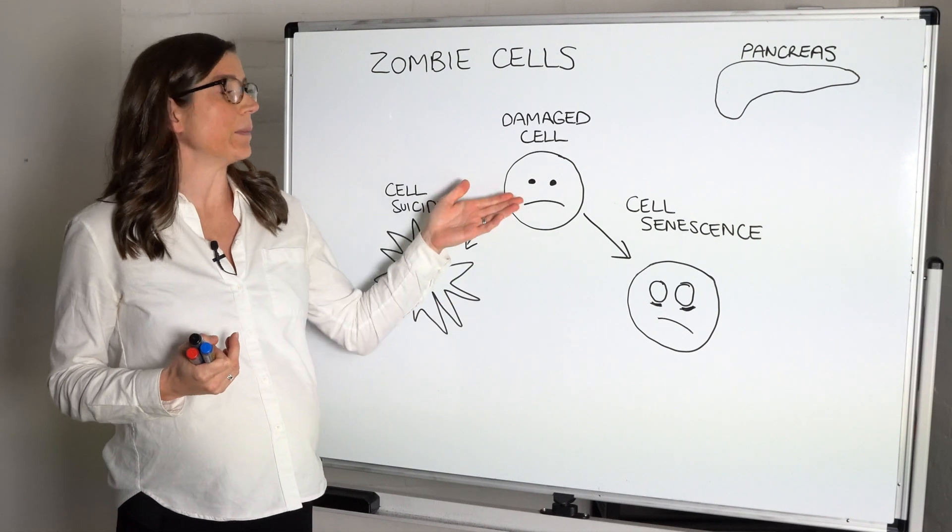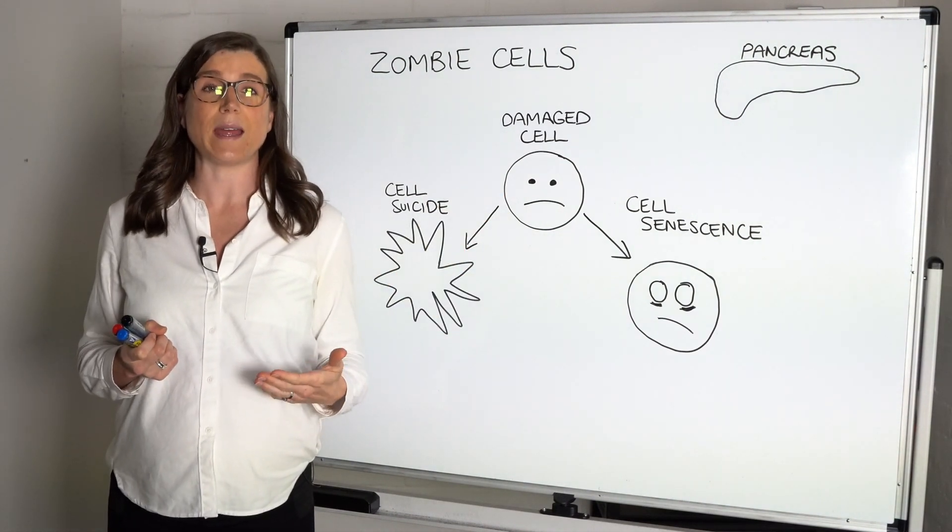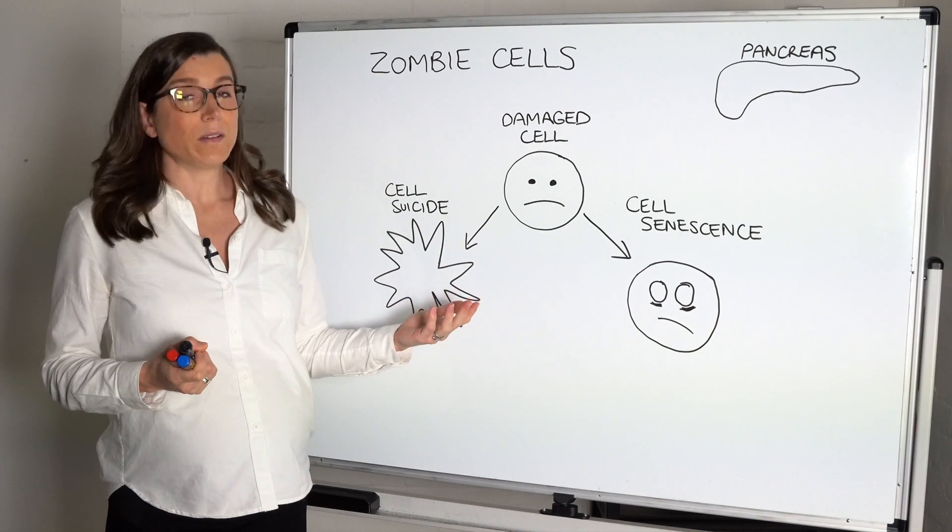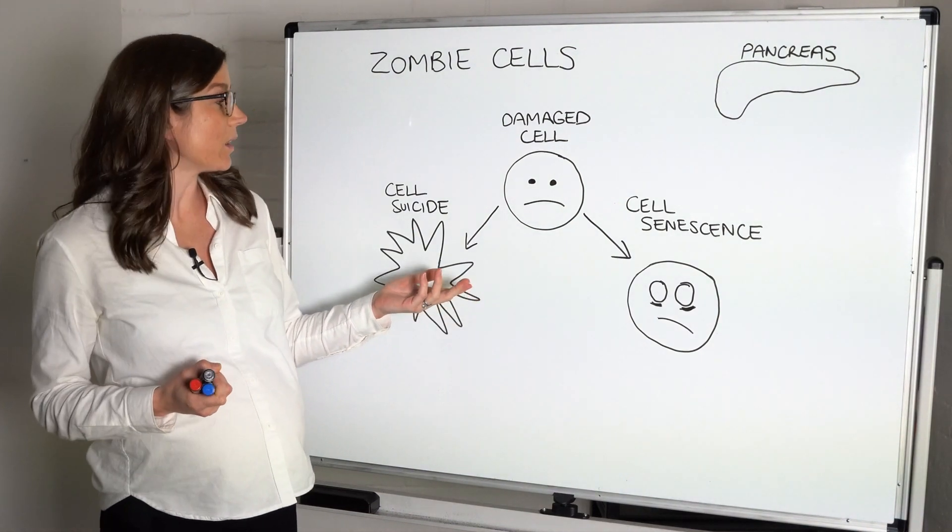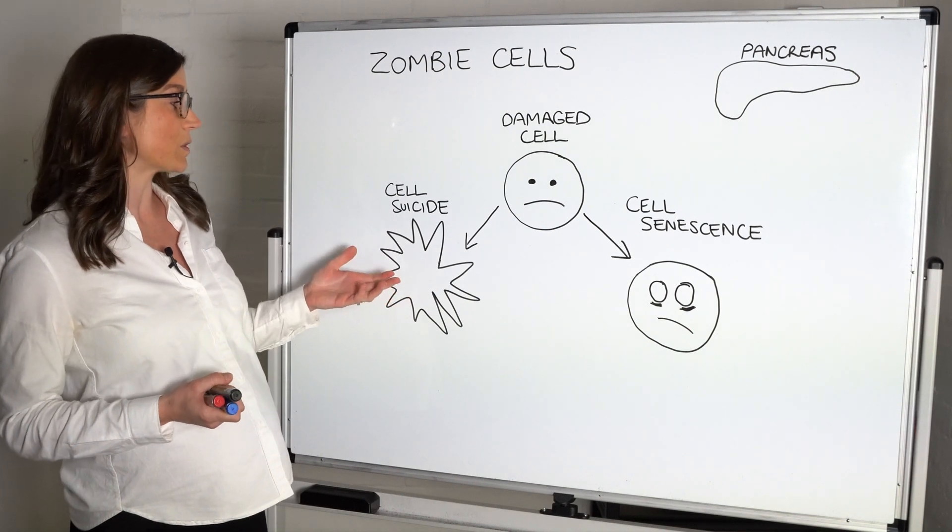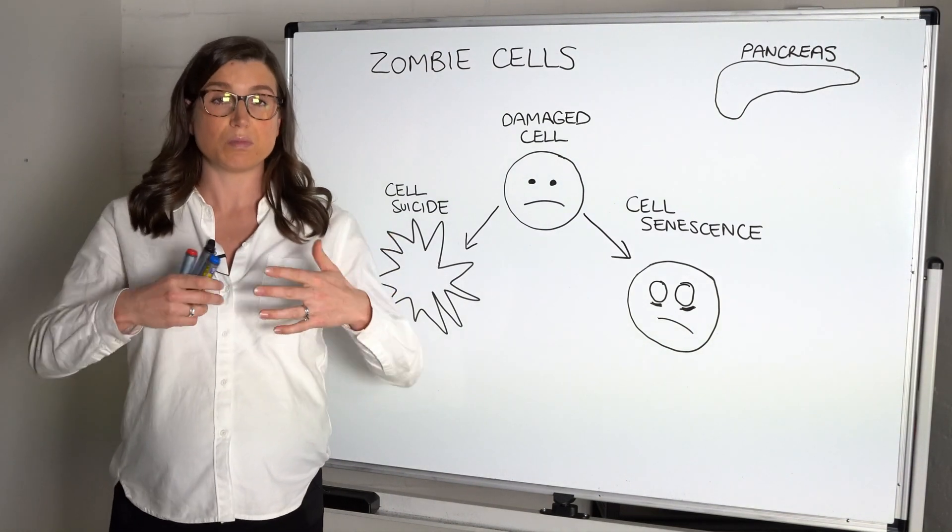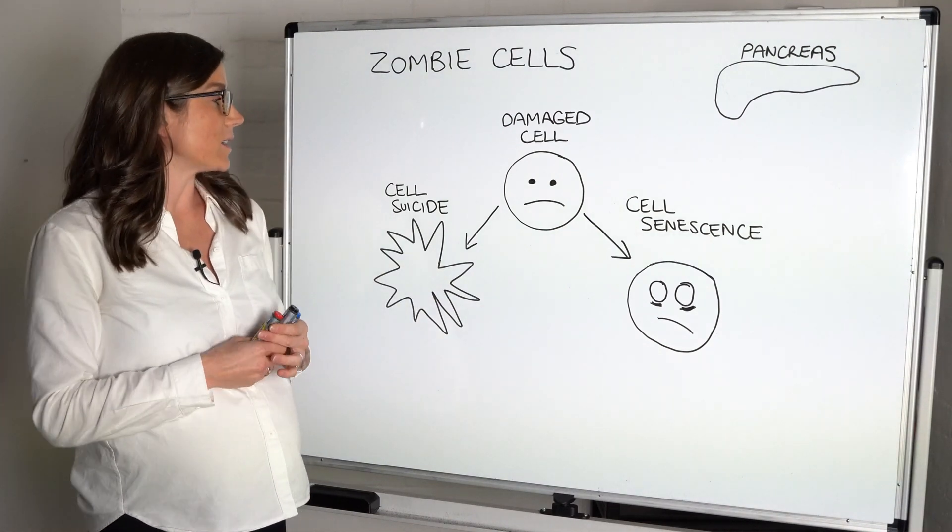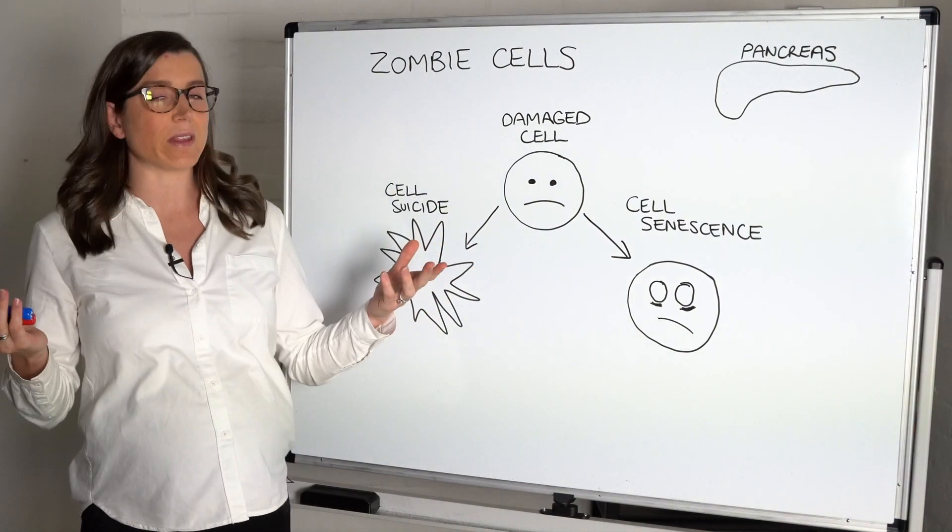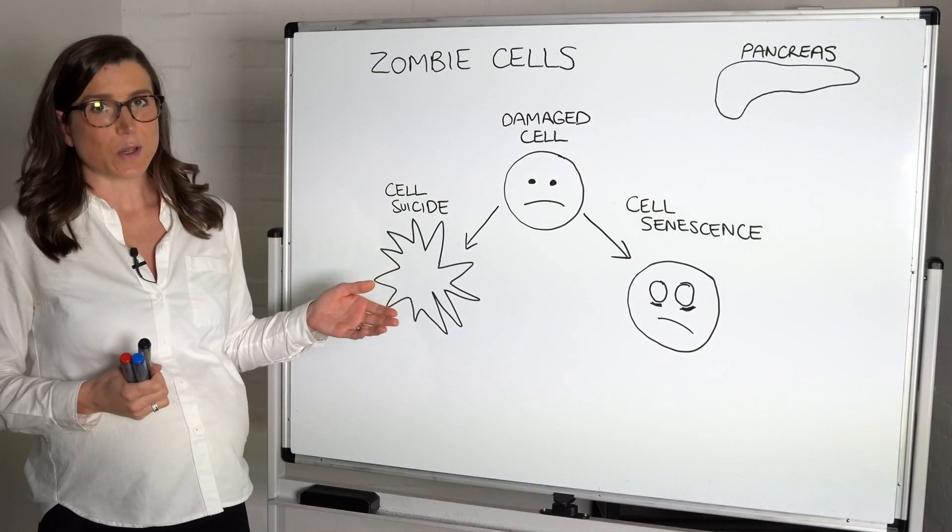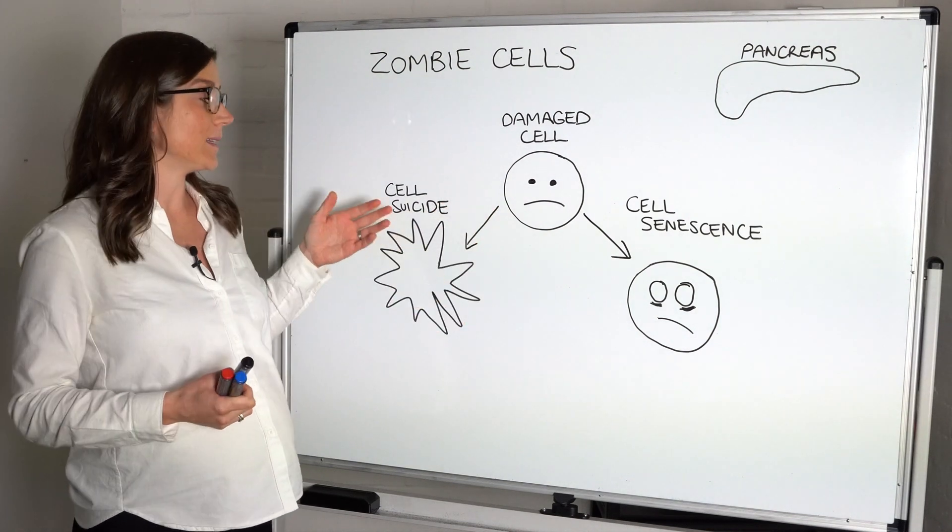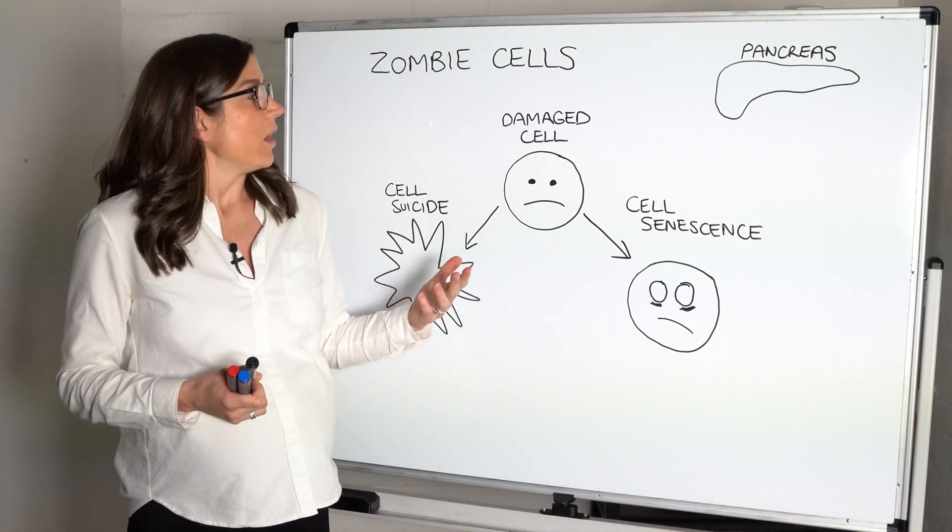Because if you have a damaged cell we don't want that to be making copies of itself and producing more damaged cells, because that could lead to things like cancer. So one of two things will happen when a cell is damaged: it will either commit suicide, which we call apoptosis. So the cell will trigger a response and it will basically die. It will kill itself, it will blow up, and its insides will be distributed and used up for other things. And this in itself is also not good because we are essentially losing healthy cells, and this can create an inflammatory response as well.